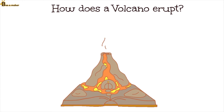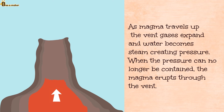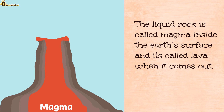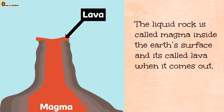How does a volcano erupt? As magma travels up the vent, gases expand and water becomes steam creating pressure. When the pressure can no longer be contained, the magma erupts through the vent. The liquid rock is called magma inside the earth's surface, and it's called lava when it comes out.